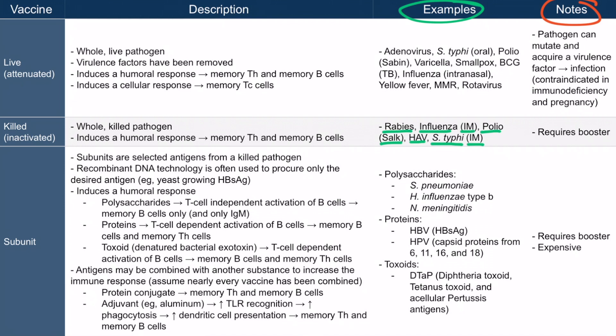One important note about killed vaccines is that they require a booster. This is logical — they didn't induce a cellular response, only memory T helper cells and memory B cells were formed, so the memory isn't as good. Another reason is that the immune system wasn't actually fighting off a real living organism, so the immune response isn't nearly as dramatic.